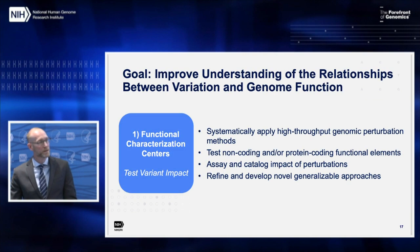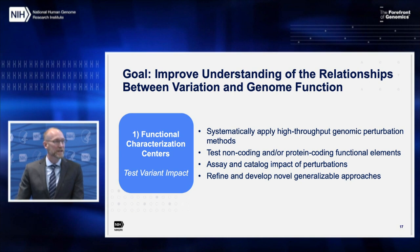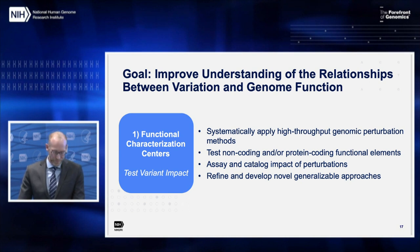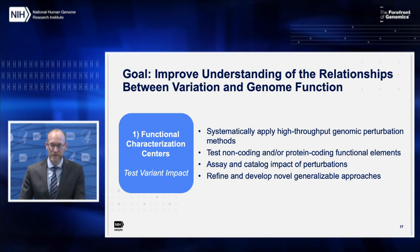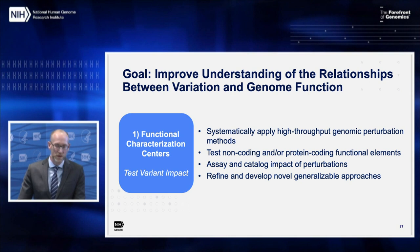To improve understanding of relationships between variation, function, and phenotype, characterization centers would systematically apply high-throughput genomic perturbation methods, testing the impact of variation on protein-coding elements, non-coding elements, or both, and assaying the impact of genomic variation on molecular, cellular, and organismal phenotypes. These centers would catalog the tested variants and their impacts and share them with the research community. Because we're still learning about the best ways to test the effects of genomic variation, refining generalizable approaches to perform these tests and catalog phenotypes would be an important part.